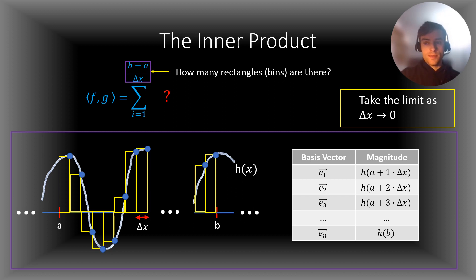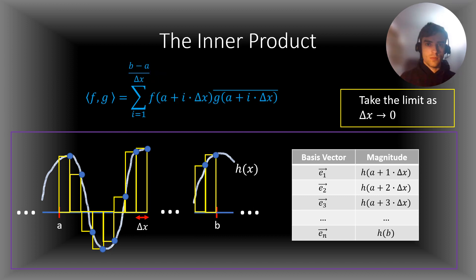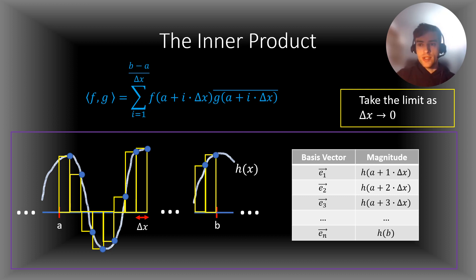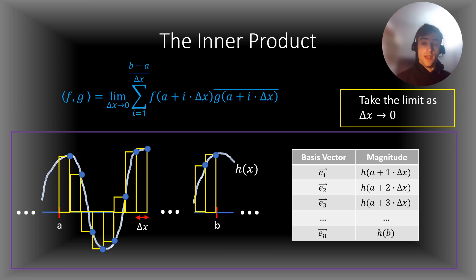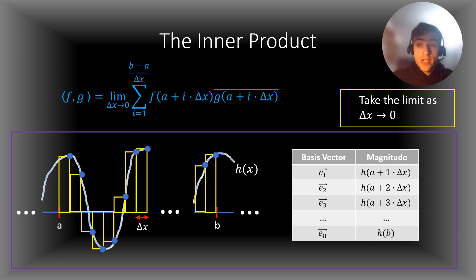But then what about the rest of the expression? Well, we would just do what we do with any other vector. We added f of (a plus i·delta x) multiplied by the complex conjugate of g of (a plus i·delta x) into the equation. And of course, let's not forget to take the limit as delta x approaches 0. And there you have it — that's your inner product, right?